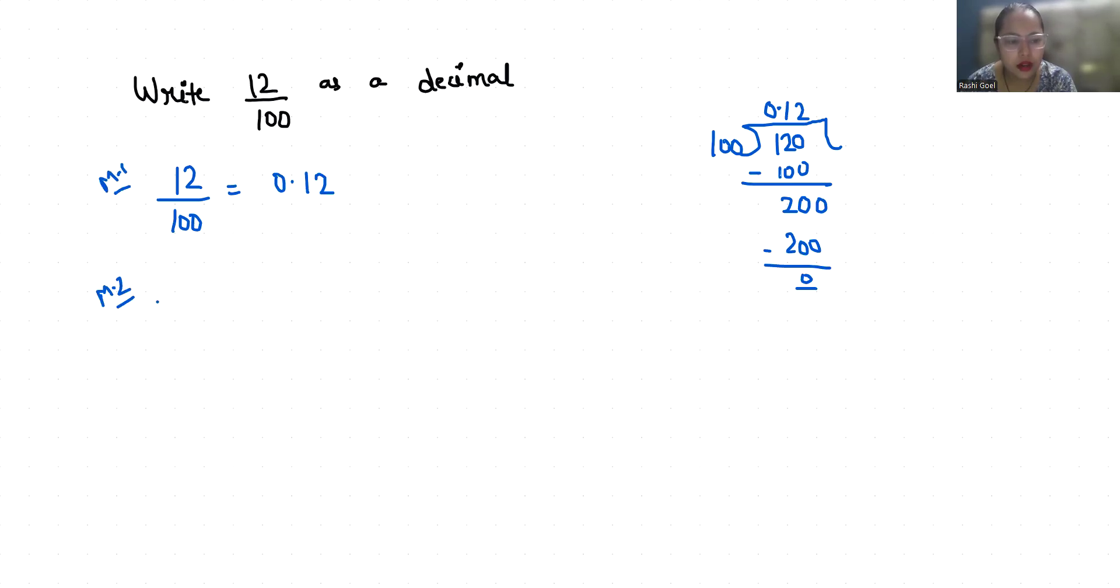12 by 100, you can reduce the fraction. So I'm going to divide it by 2, we get 6 by 50. Again, I'm going to divide it by 2, so we get 3 by 25.